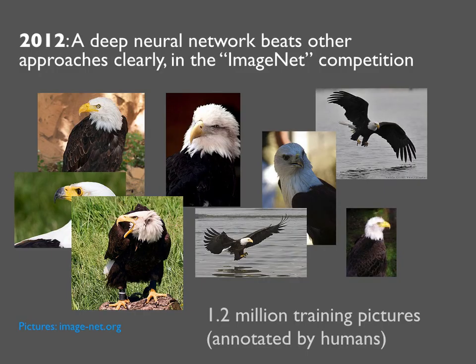This has been going on for half a century, but the larger community in science and technology took note basically since 2012. That's when a deep neural network was able to beat all other approaches in one of those important competitions in computer science — in this case, the so-called ImageNet competition, where you are given a million training pictures and can do with them whatever you want. This was the first time a deep neural network beat all other approaches, and since then they've been better than even humans.